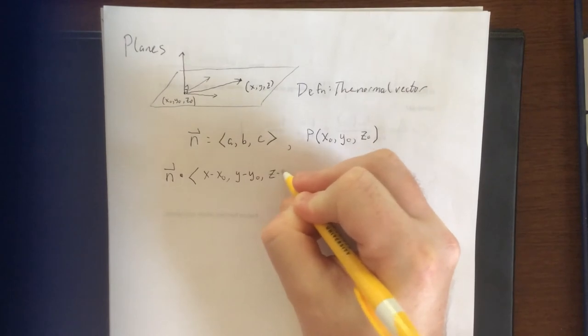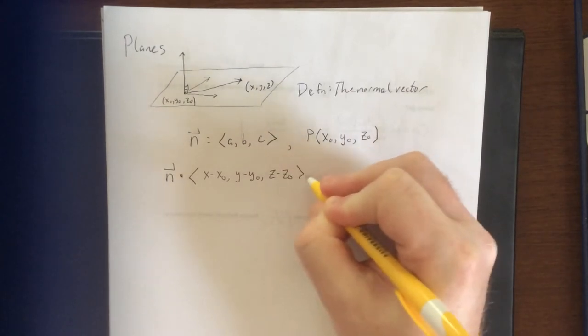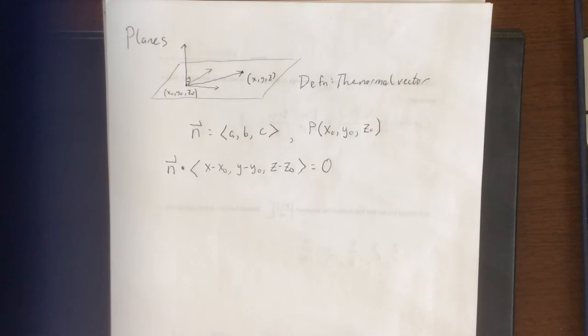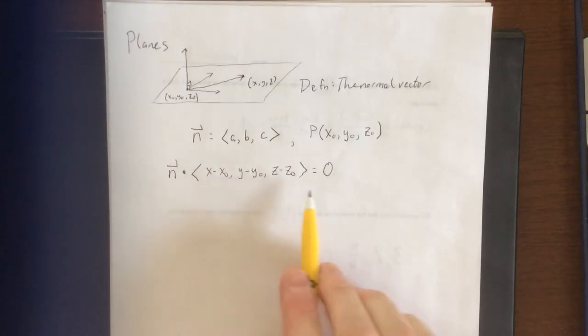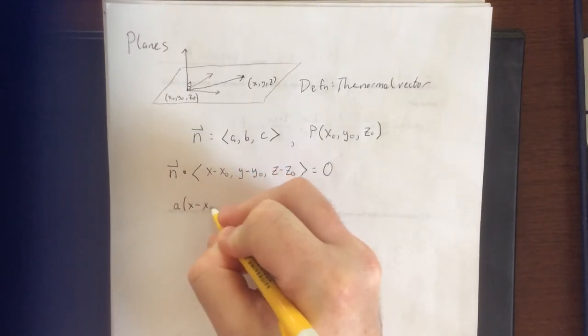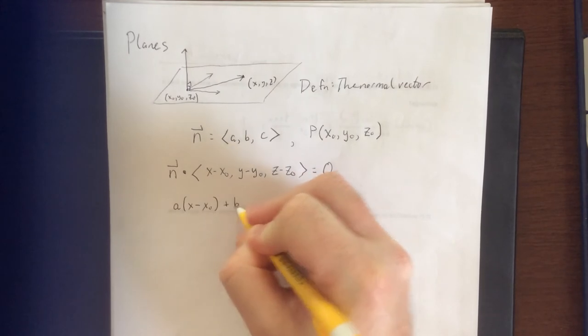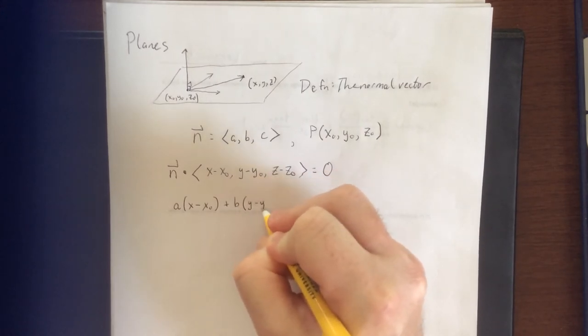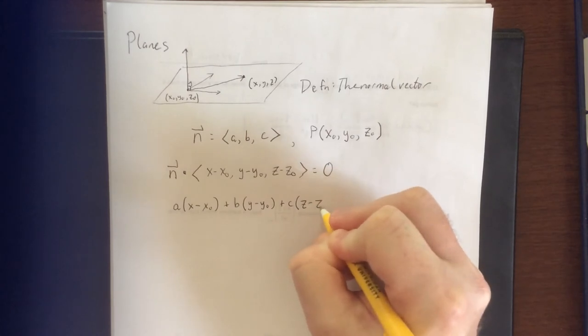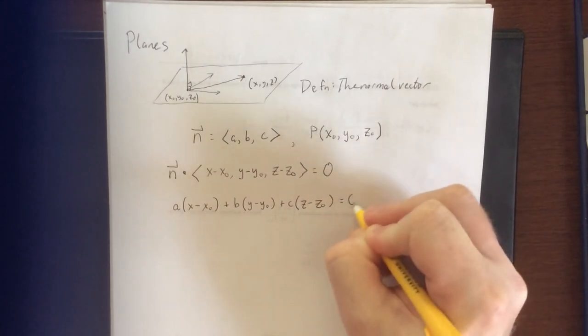And z minus z naught. I know that because they're orthogonal to each other that the dot product of those two vectors is guaranteed to be zero. More specifically, if I were to actually take these three components and multiply them by these corresponding components, I would get the following. This is a times x minus x naught plus b times y minus y naught plus c times z minus z naught. That all is equal to zero.